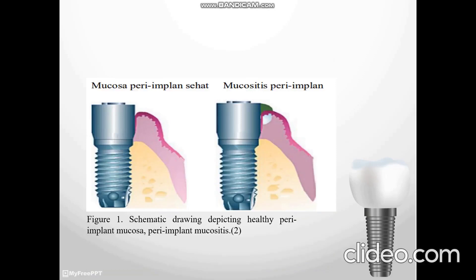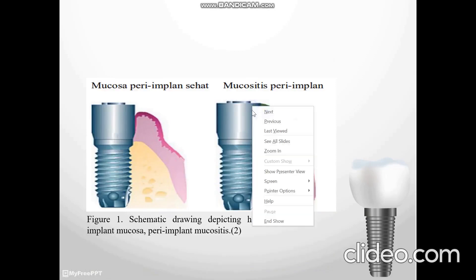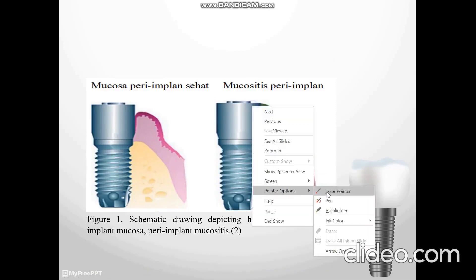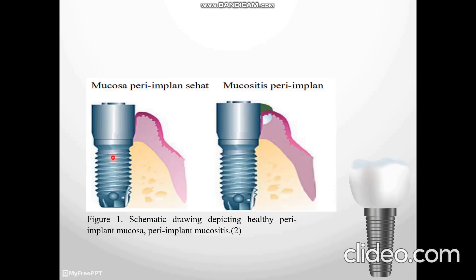Can you see the picture? For figure one, this shows healthy peri-implant mucosa. And for figure two, this is peri-implant mucositis.